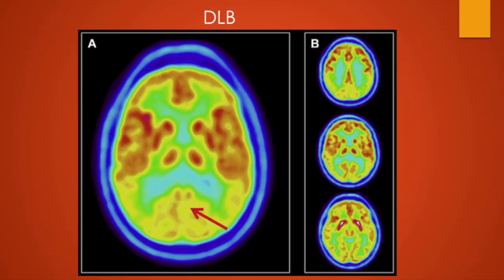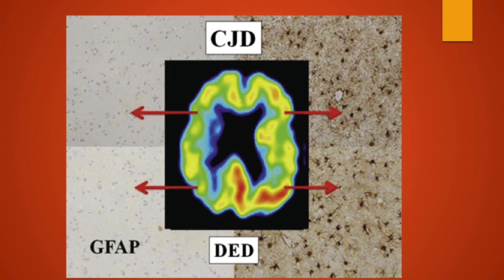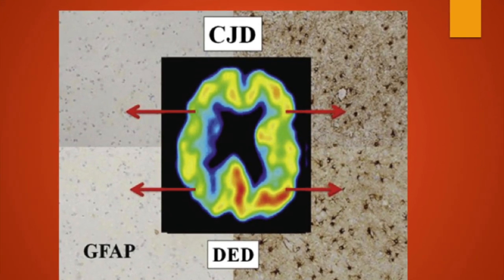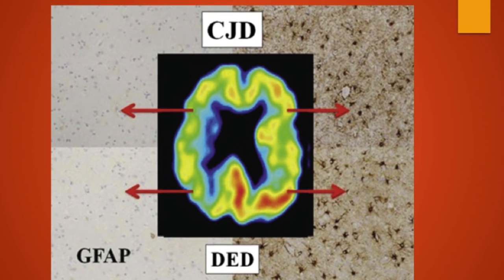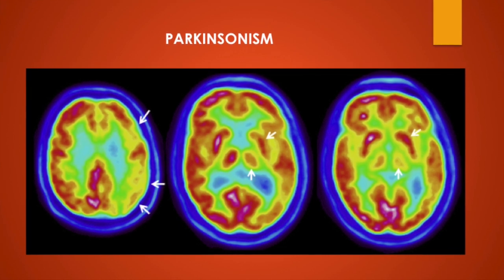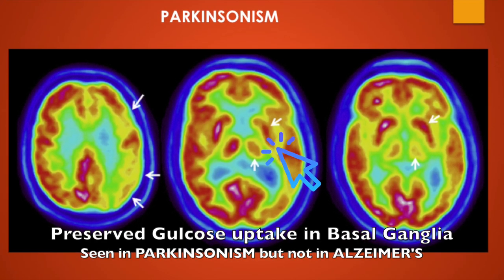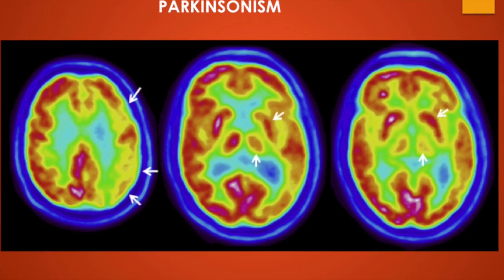Coming to DLB, there is parietal and temporal lateral hypometabolism similar to the pattern in Alzheimer's disease, and occipital and parietal visual cortex involvement is important in the differential diagnosis. Hypometabolism may also be present in the basal ganglia in some variations of DLB. Coming to Creutzfeldt-Jakob disease, there is distinct hypometabolism in large areas of the brain involving the right or left hemisphere, or bilateral in most cases. The differentiation from other dementia groups is that temporal lobes are usually less affected in CJD. In Parkinsonism, hypometabolism in parietal and temporal lateral cortices is similar to Alzheimer's disease, but the hallmark is preserved glucose uptake in the basal ganglia.